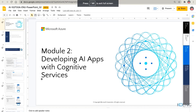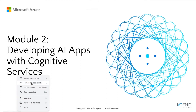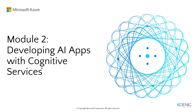Then in the second module, we were talking about developing your AI application with cognitive service. One thing we need to remember — we were discussing about some general cognitive service and standalone. Can you elaborate that? What was the meaning of that?